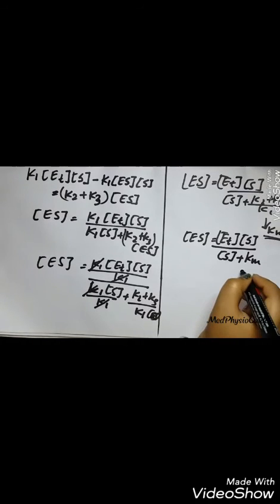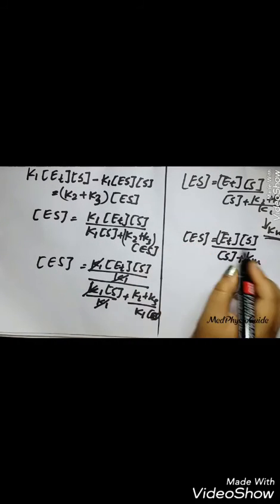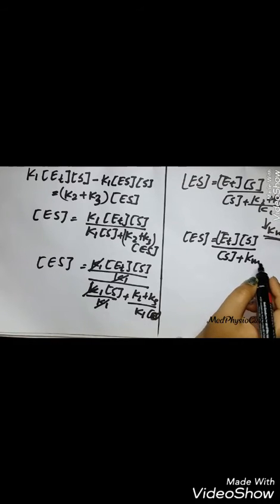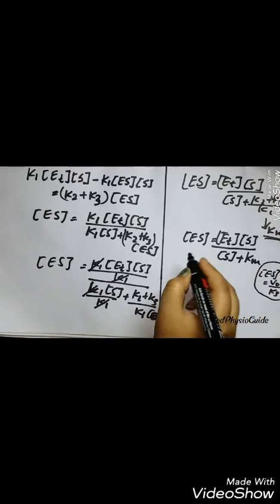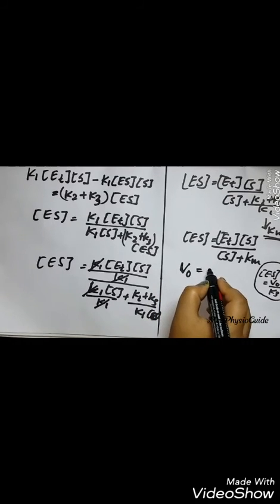We go back straight to equation 1, which was V0 is equal to K3 into concentration of ES. It can also be written as ES is equal to V0 by K3. We replace the term with V0 by K3.